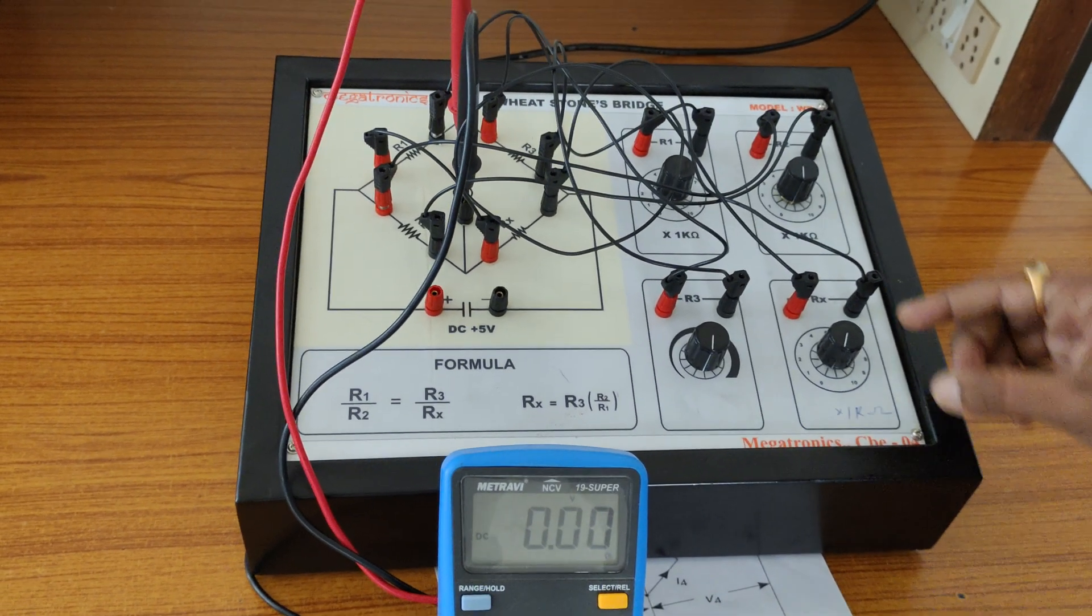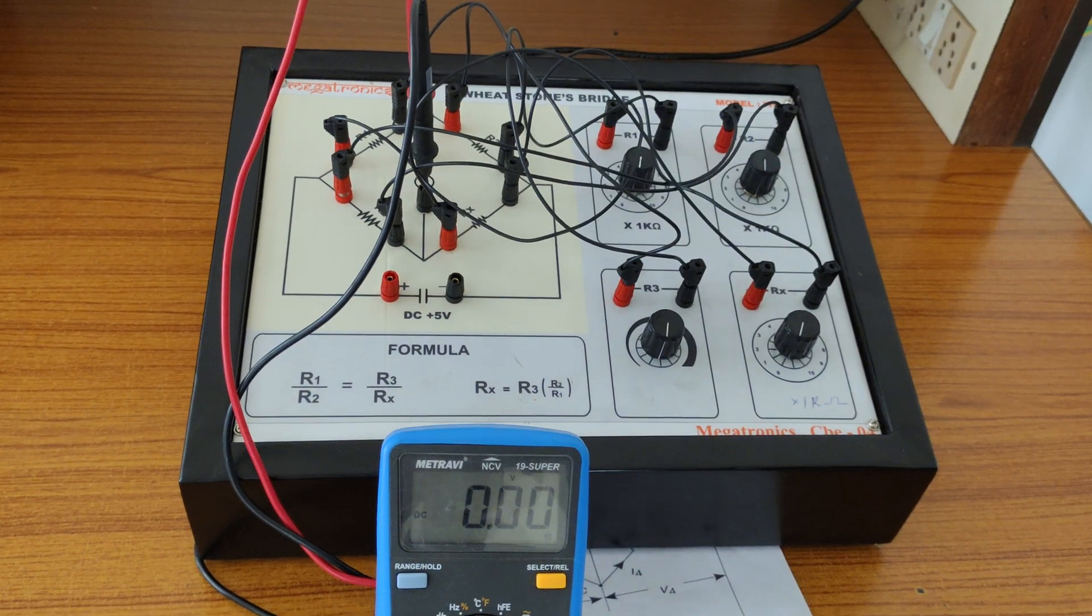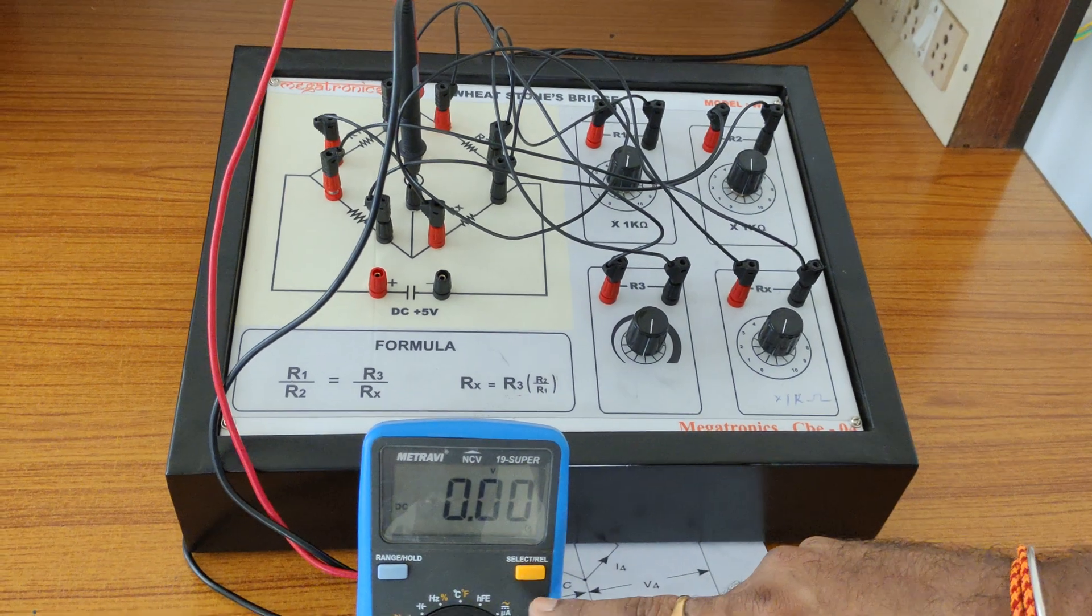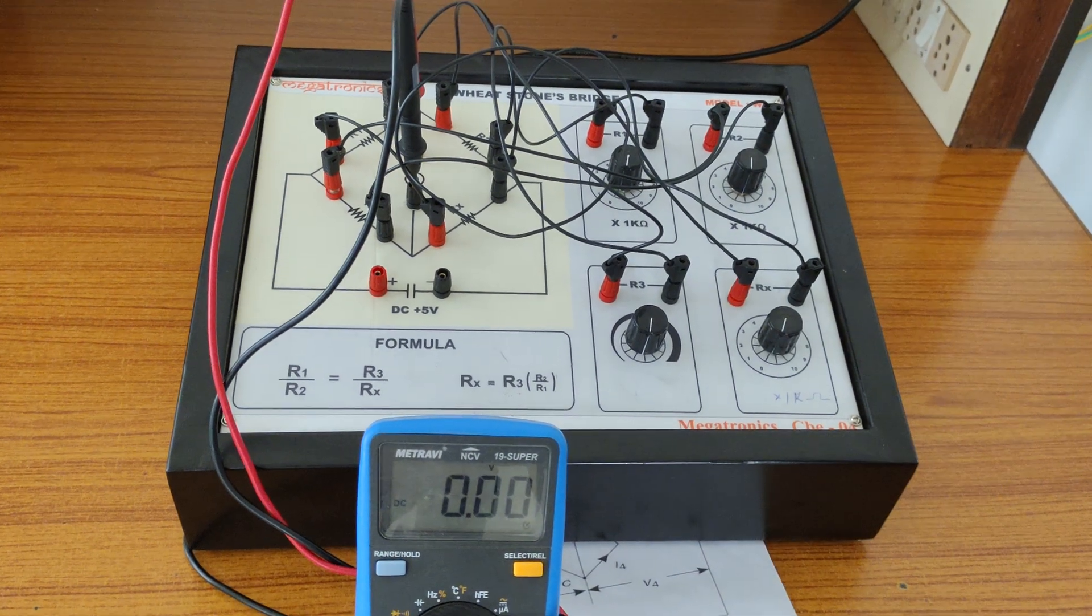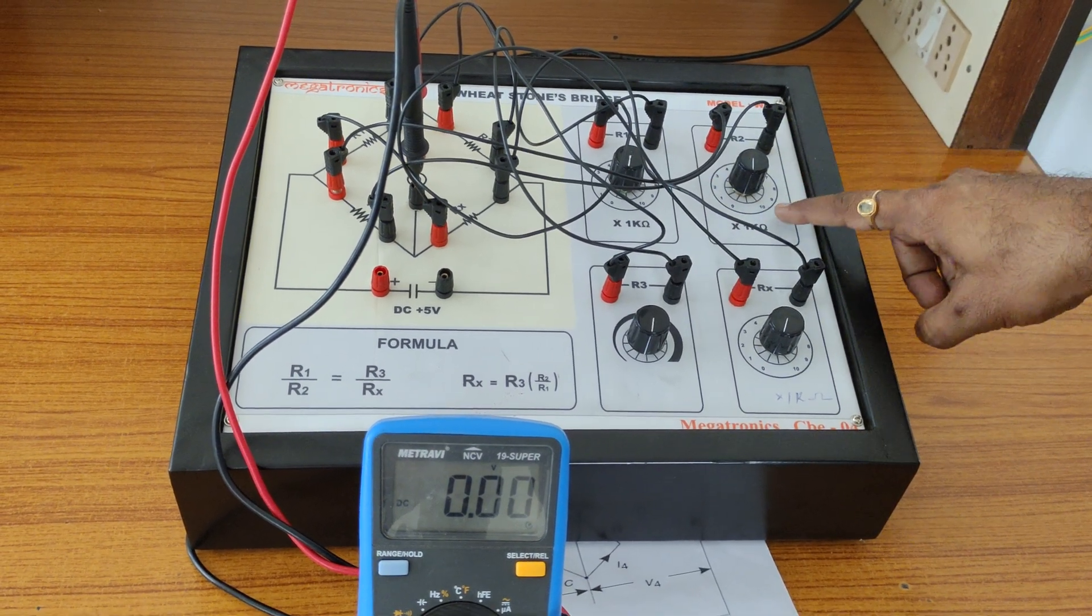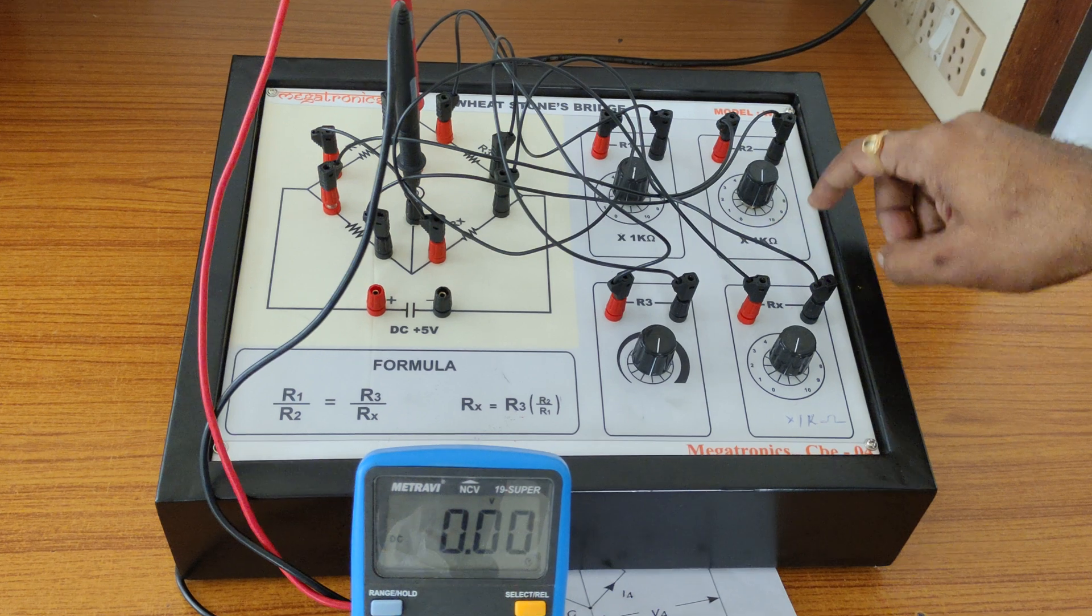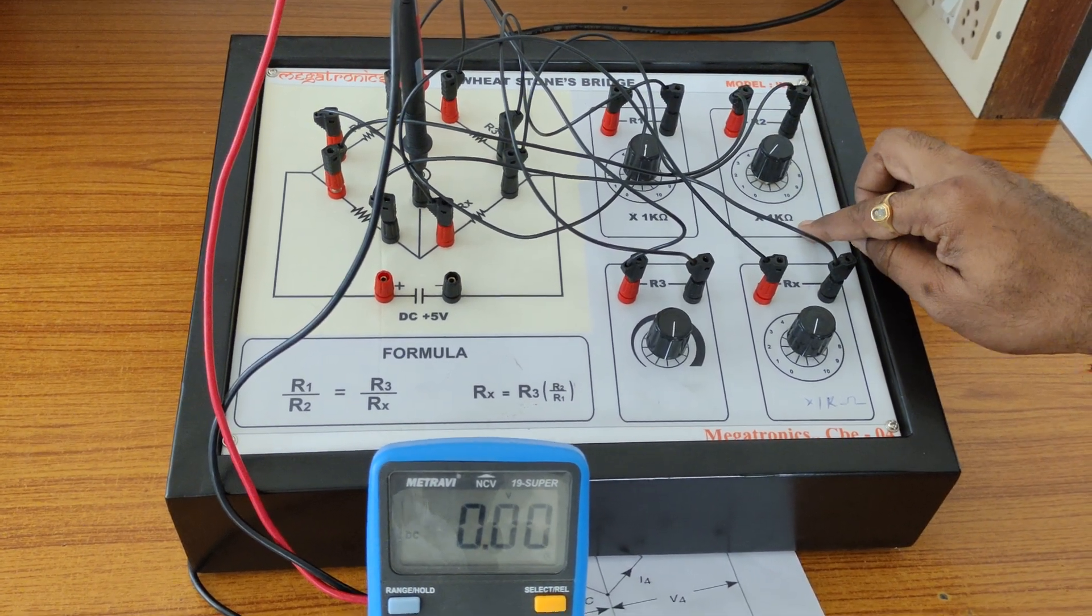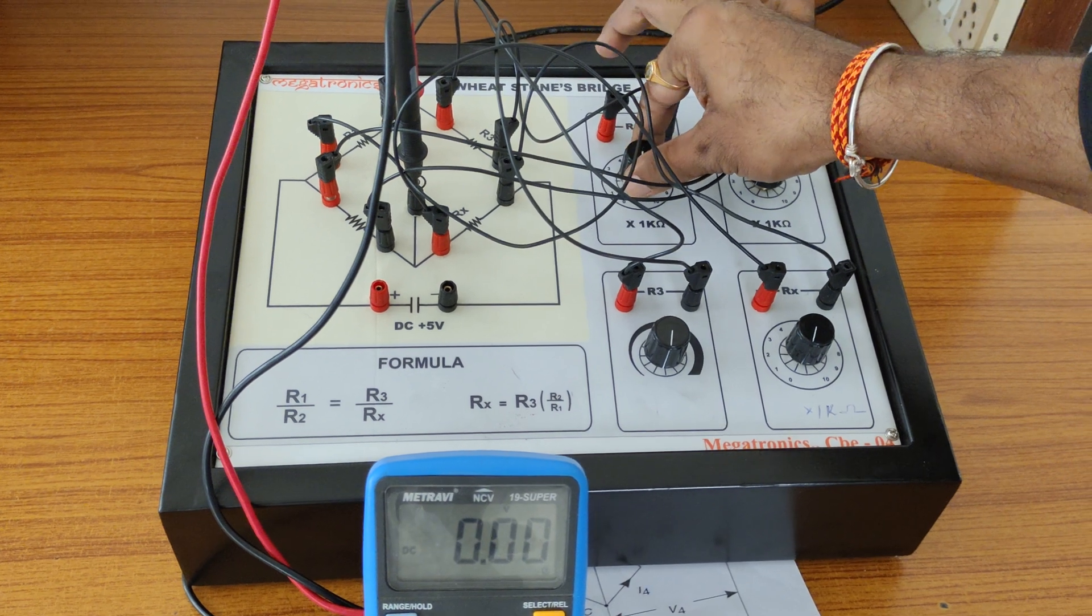We can observe easily here with the help of multimeter. I have connected one deflection galvanometer. Just observe one more thing: for each step they have given 1, 2, 3 up to 7 to 10 which indicates if I change one knob that is 1 kilo ohm. If I change this one also, another 1 kilo ohm. Again this one, 1 kilo ohm.